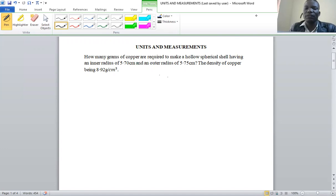This should be one of the first chapters or topics that you cover in physics. So this question is how many grams of copper are required to make a hollow spherical shell having an inner radius of 5.7 centimeters and an outer radius of 5.75 centimeters. Take the density of copper to be 8.92 grams per cubic centimeter.